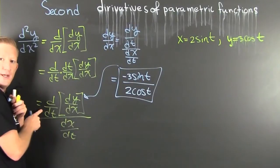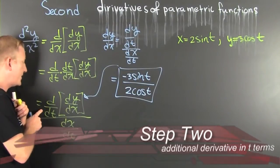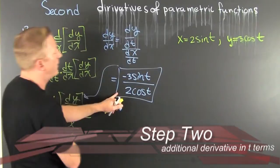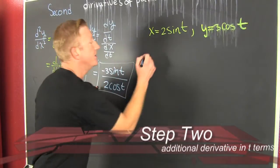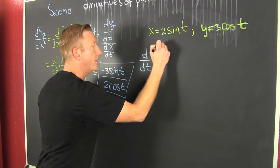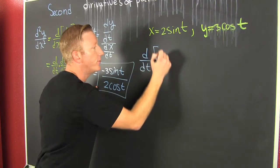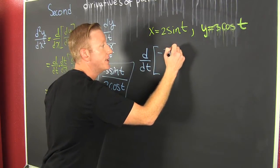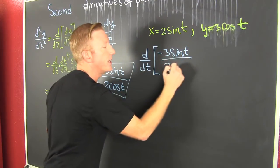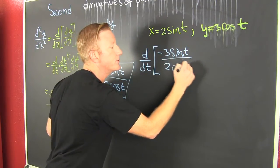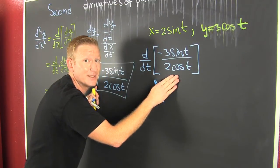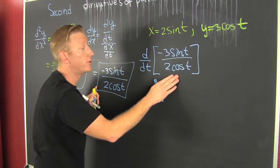Now, what do we need to do in order to get the second derivative? We're going to have to get the derivative of that — d/dt of minus 3 times the sine of t divided by 2 times the cosine of t.